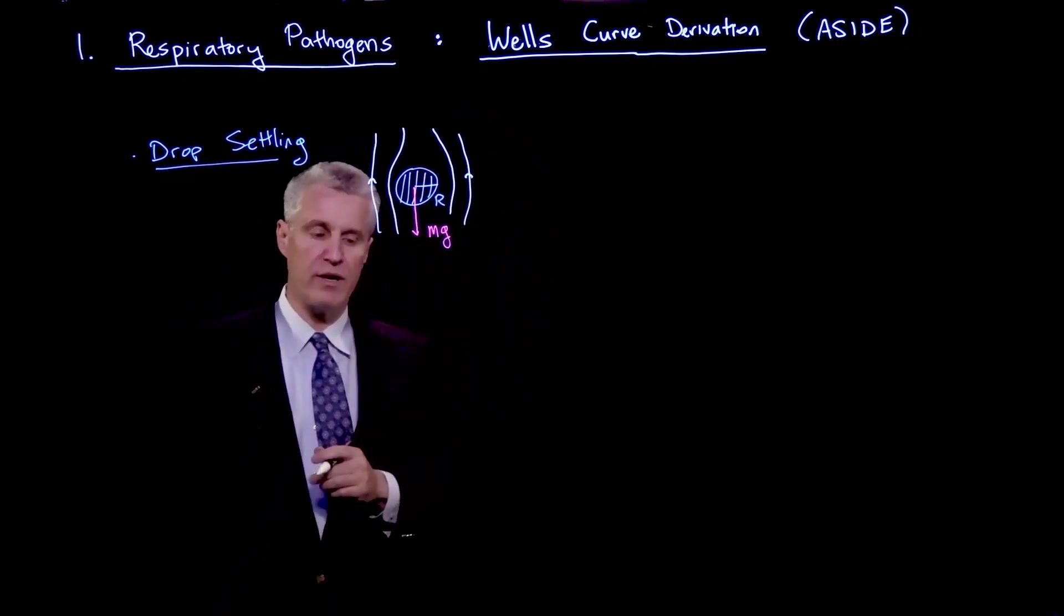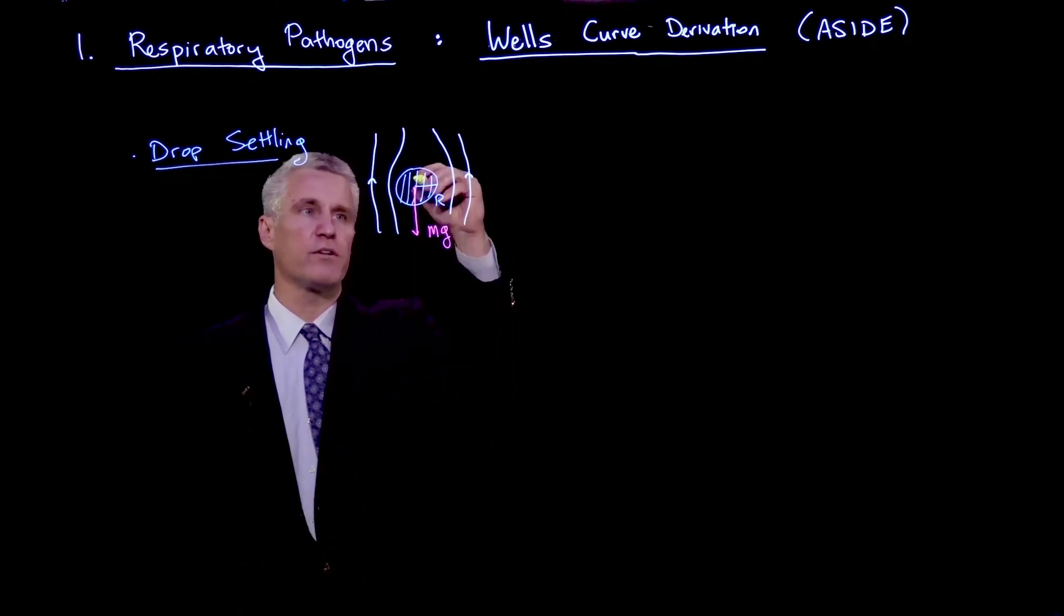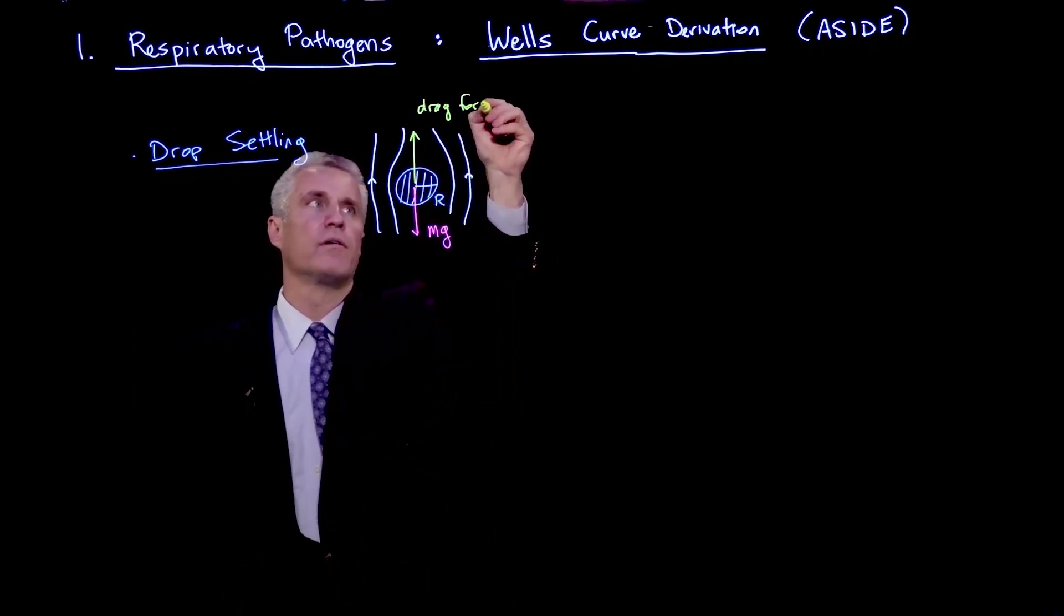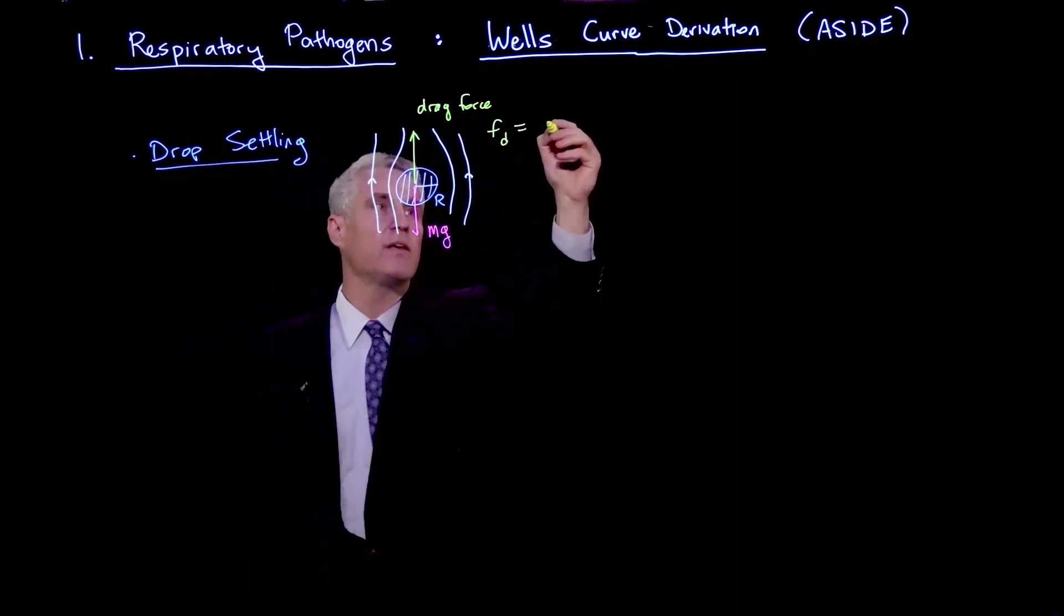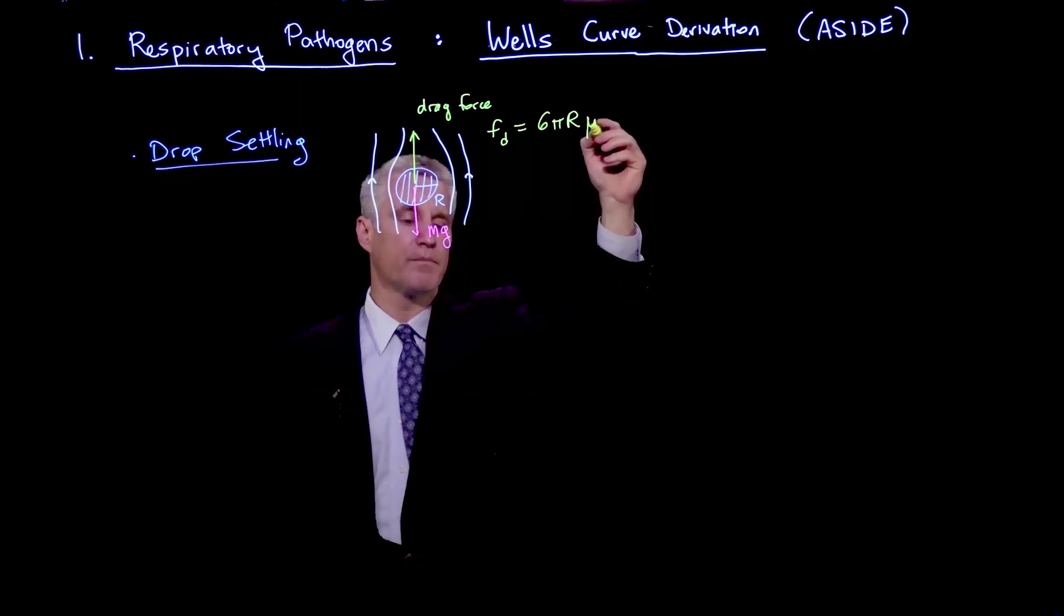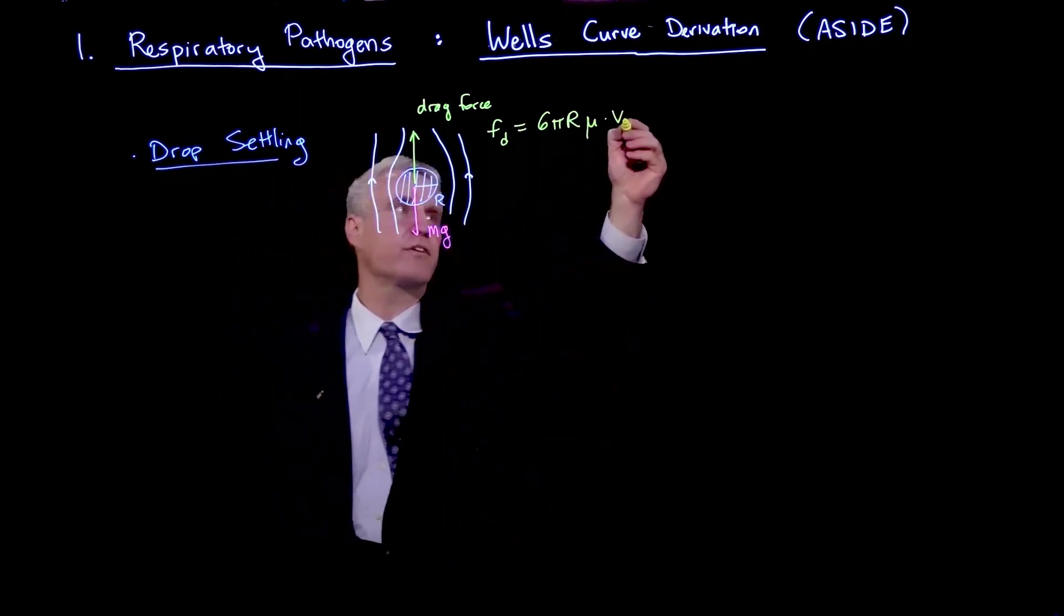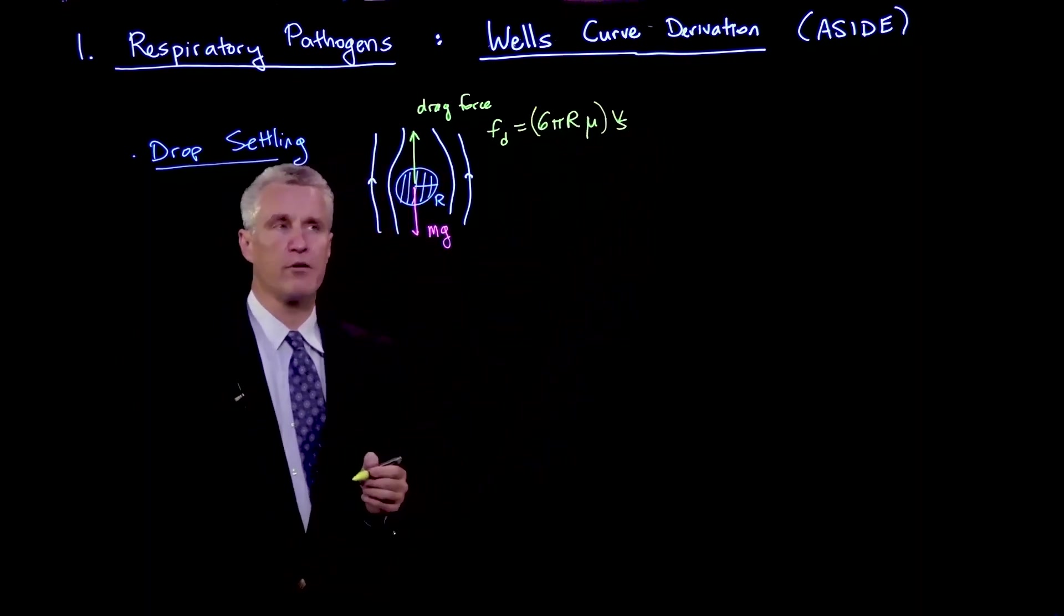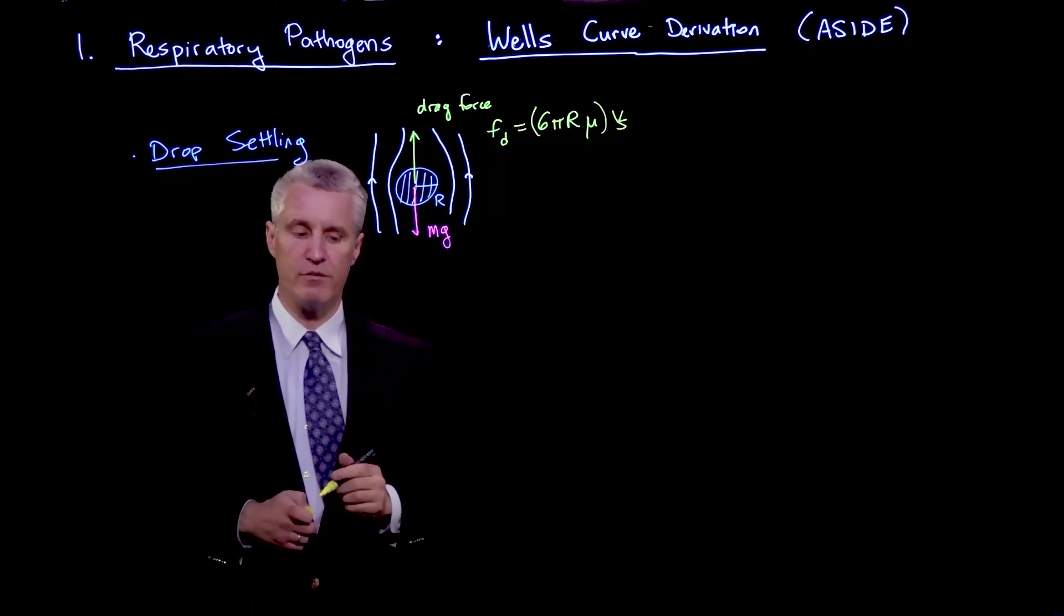If you solve for the viscous flow around an object being dragged through a fluid, then you arrive at the result of Stokes, which is the drag on that fluid. If you're falling at a velocity v, then the drag force fd is 6π times the radius of the drop times the viscosity of the fluid times the velocity of the drop. This here is the Stokes drag coefficient, which comes from solving the fluid mechanics of viscous flow around a sphere translating at a constant speed.